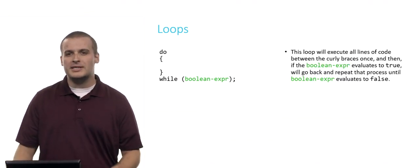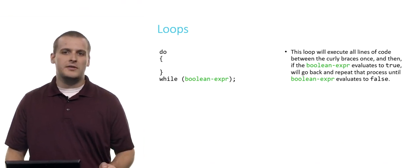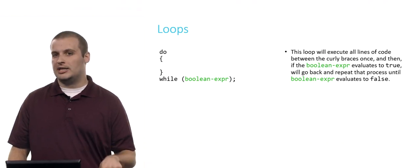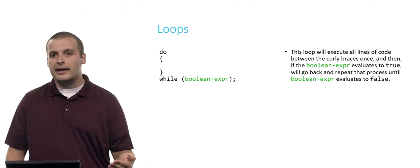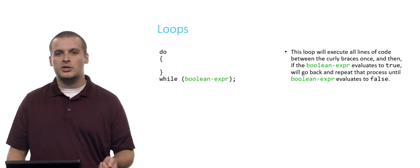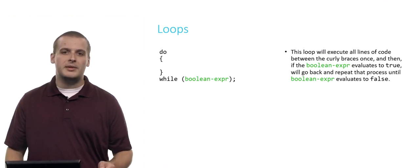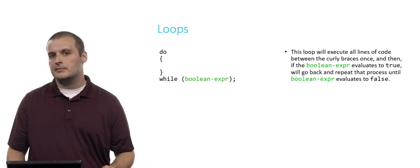The next kind of loop is actually pretty similar. It's called the do-while loop. This loop will execute all of the lines of code between the curly braces once, and then it will check the Boolean expression. If the Boolean expression evaluates to true, it'll go back and repeat that process over and over until the Boolean expression evaluates to false. So this loop, unlike a while loop, is guaranteed to run at least one time. This could be pretty useful.